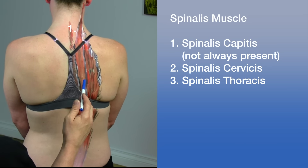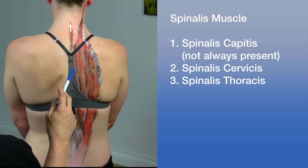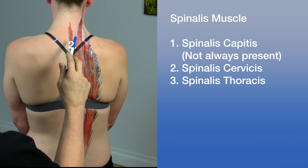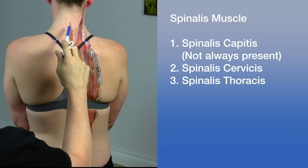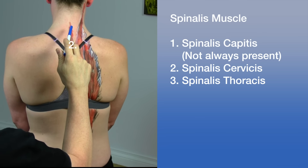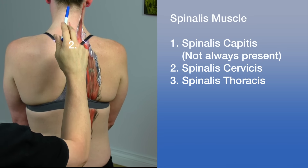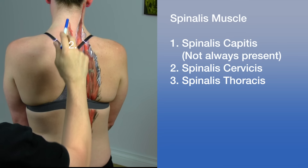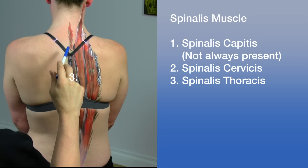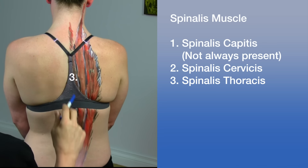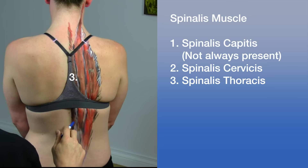The longissimus thoracis originates from the lumbar transverse processes and inserts on the thoracic transverse processes and the posterior aspects of ribs 9 and 10, essentially filling the groove formed where the thoracic vertebrae meet the ribs. Moving medially, we then get into the spinalis muscles, which are adjacent to the vertebrae.